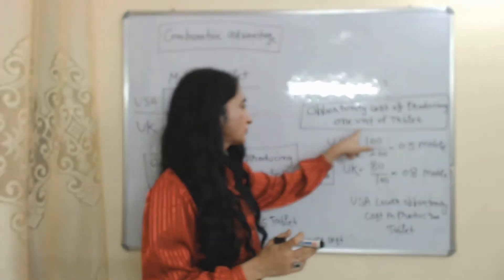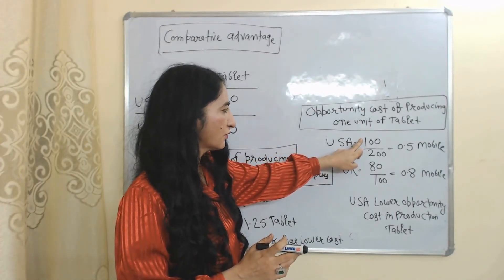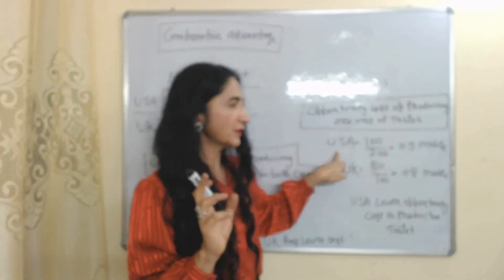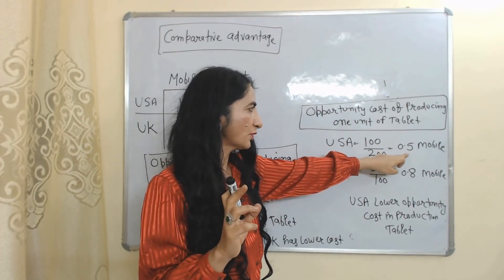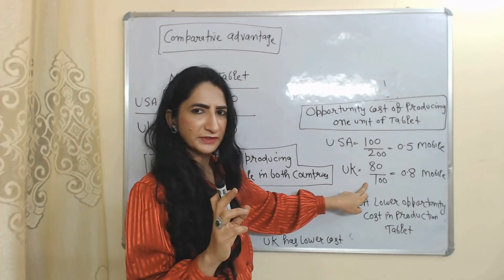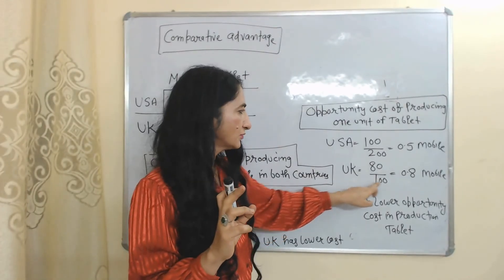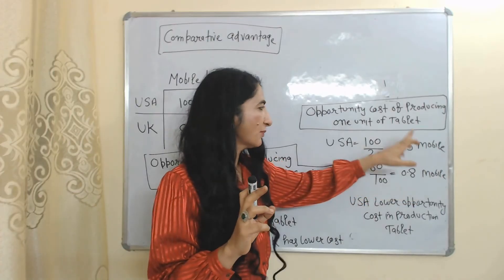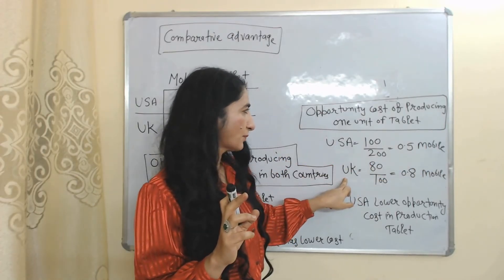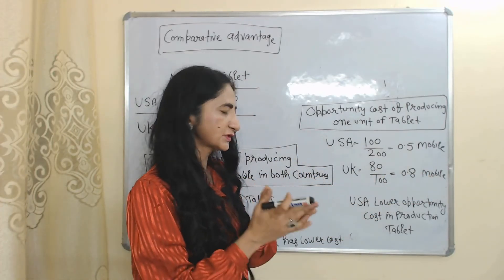Now we will see the opportunity cost of producing one unit of tablet. In USA, 100 units of mobile divided by 200 units of tablet equals 0.5, meaning in USA, in order to produce one tablet, they have to sacrifice 0.5 mobiles. In UK, 80 units of mobile divided by 100 units of tablet equals 0.8, meaning in UK, in order to produce one tablet, they have to sacrifice 0.8 mobiles. So the opportunity cost of producing one tablet in USA is the sacrifice of 0.5 mobiles, and in UK it is the sacrifice of 0.8 mobiles. USA has lower opportunity cost in production of tablet.